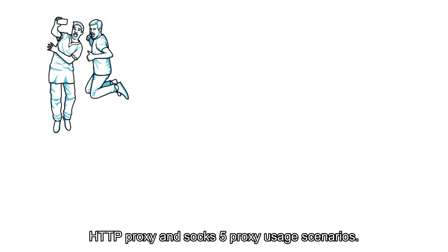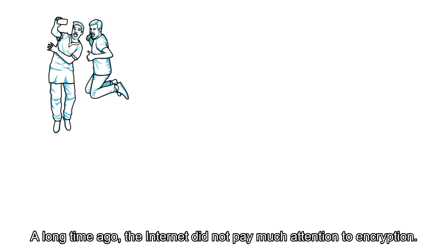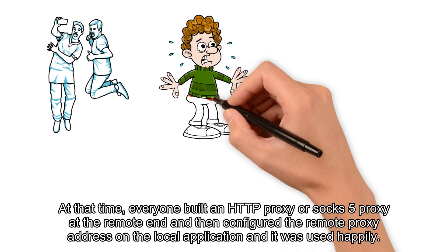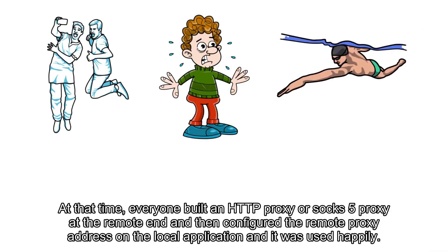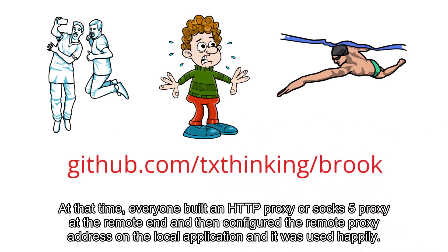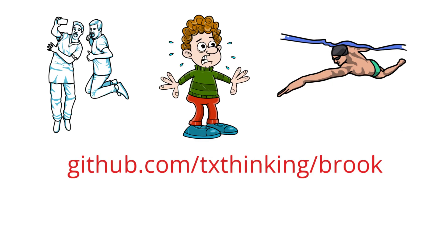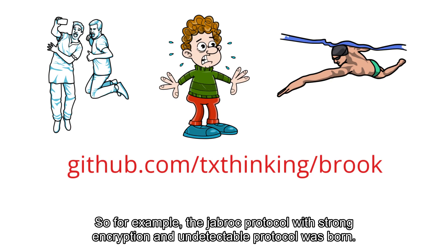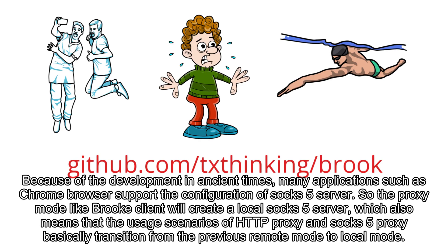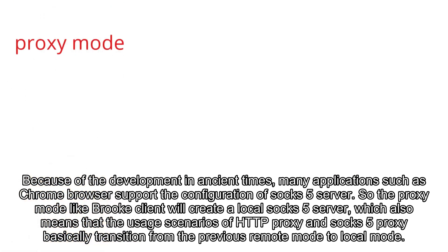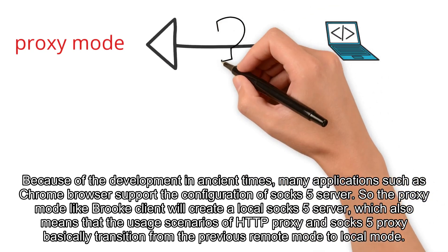Now let's look at HTTP proxy and SOCKS5 proxy usage scenarios. A long time ago, the internet did not pay much attention to encryption. At that time, everyone built an HTTP proxy or SOCKS5 proxy at the remote end and configured the remote proxy address on the local application. However, people realized the data transmitted through these two proxy protocols was not encrypted, so people on the network could see the transmitted data. This led to the birth of strongly-encrypted protocols. Because of this historical development, many applications such as Chrome support SOCKS5 configuration, so clients like brook now create a local SOCKS5 server — meaning usage has transitioned from remote mode to local mode.